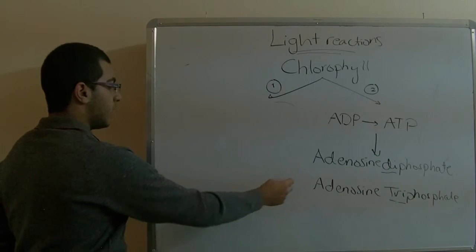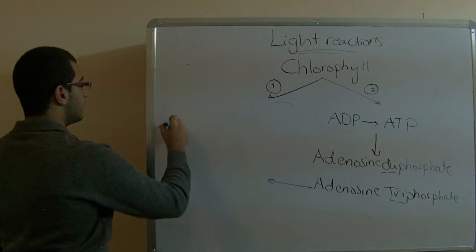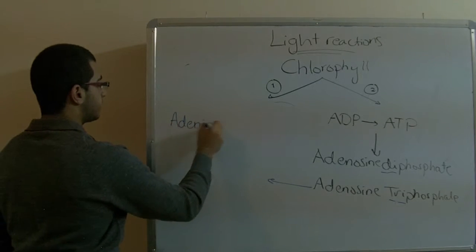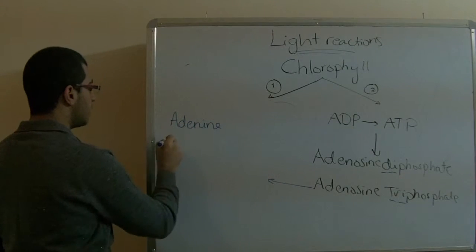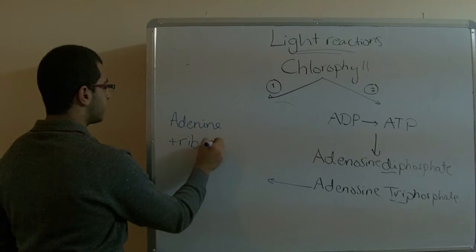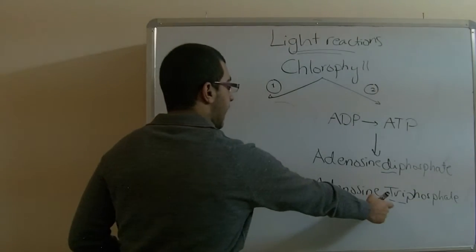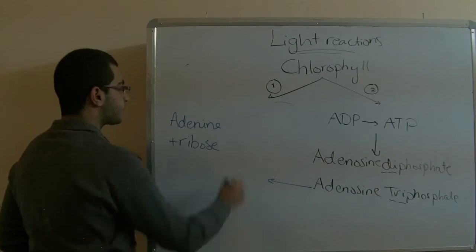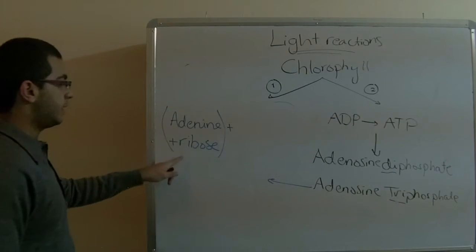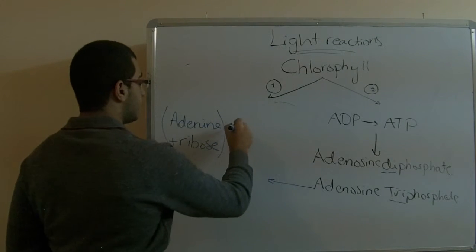This molecule consists of the following: we have adenine plus a sugar called ribose to get the adenosine, and here we have triphosphate. So adenine plus ribose plus triphosphate.